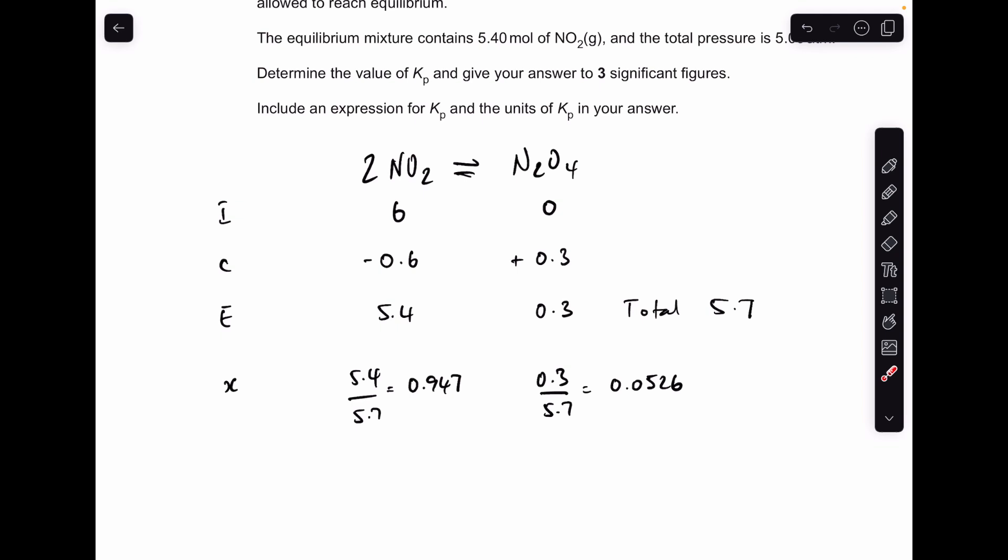So the next thing we need to do is work out the partial pressures of each of these gases. So that's just the mole fraction times the total pressure, which we're told in the question is 5 atmospheres. So there's my two partial pressures. And another quick check you can do here is they need to add up to 5. And they do.